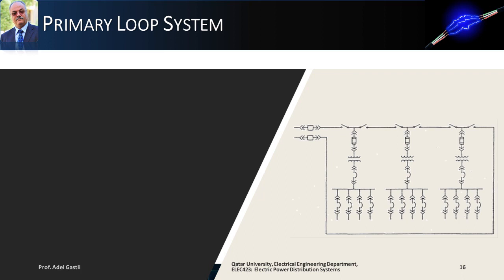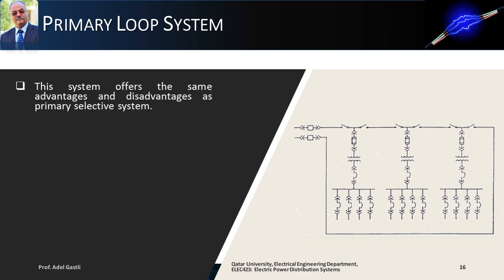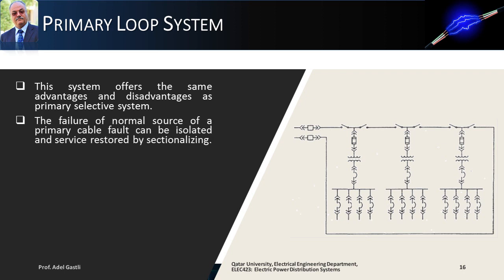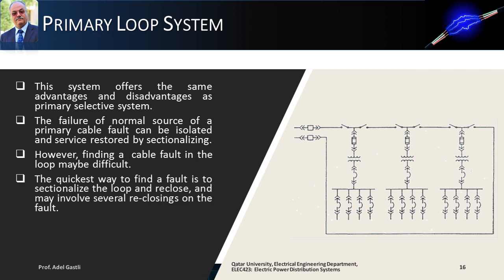Another type of distribution system is the primary loop system. It is called primary selective because the selection switches are placed on the primary sides of the transformers. This system offers the same advantages and disadvantages as the primary selective system. The failure of a normal source or a primary cable fault can be isolated, and service can be restored by properly sectionalizing the system network. However, finding a cable fault in the loop may be difficult. The quickest way to find a fault is to sectionalize the loop and reclose, which may involve several reclosings on the fault.